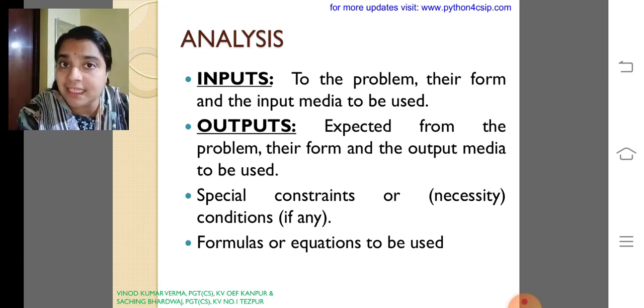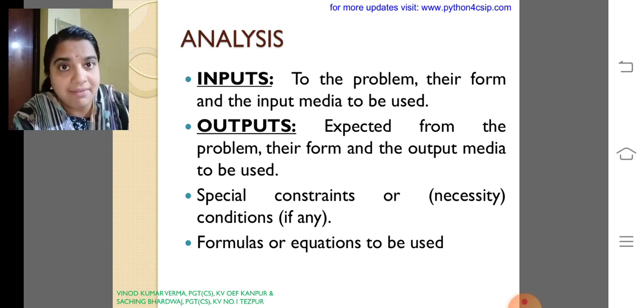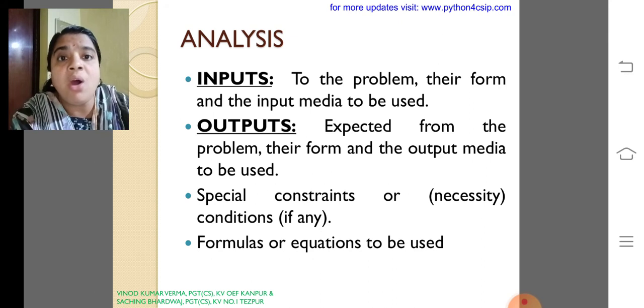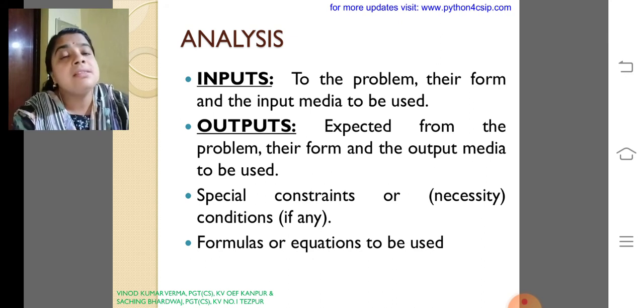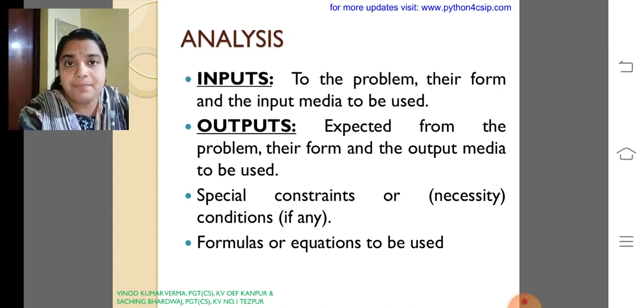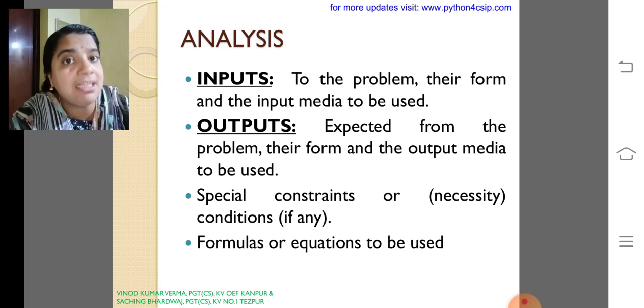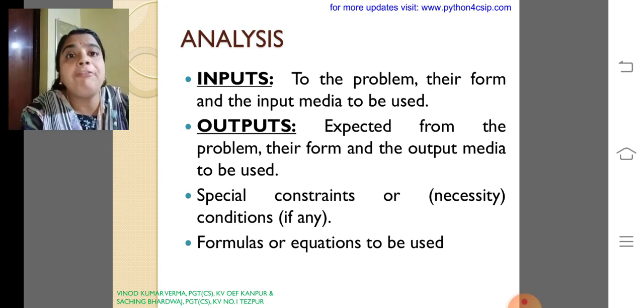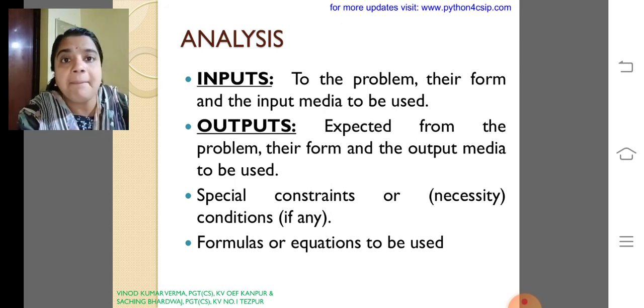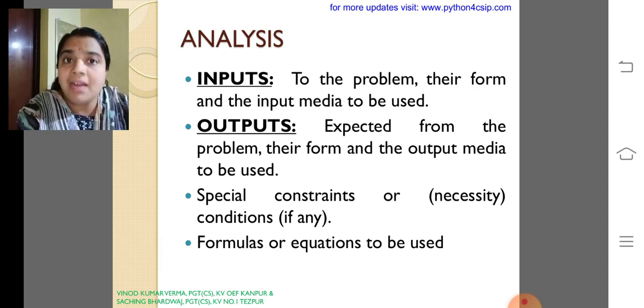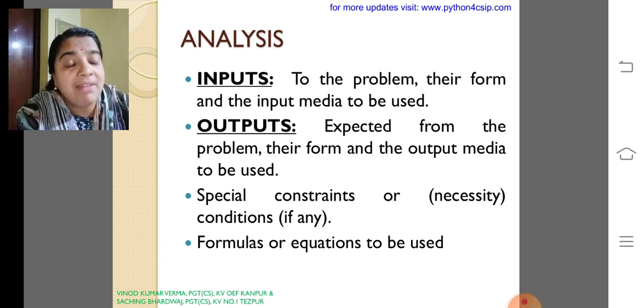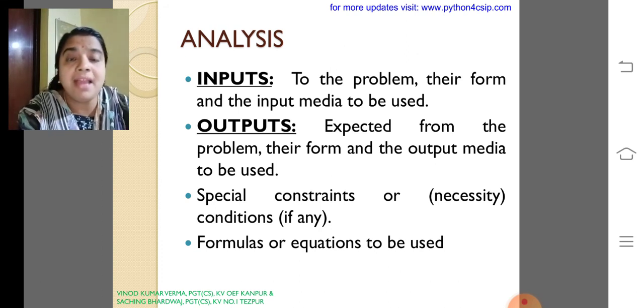What are the inputs I said? I had given the inputs as the numbers, the odd numbers from 6 to 12. The output is nothing but the square. The formula, that is number into number. So this is the analysis. We should have to be aware while we are giving or while we are getting any problem and its solution.